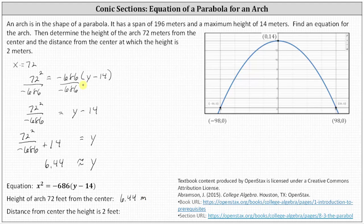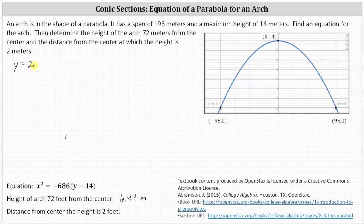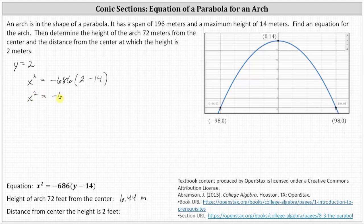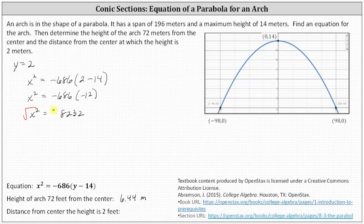Now let's answer the second question: find the distance from the center at which the height is two meters. We're given y = 2 and need to find x. Substituting into our equation gives x² = −686(2 − 14), which simplifies to x² = −686 × (−12) = 8,232. Taking the square root of both sides, x ≈ ±90.73 meters.